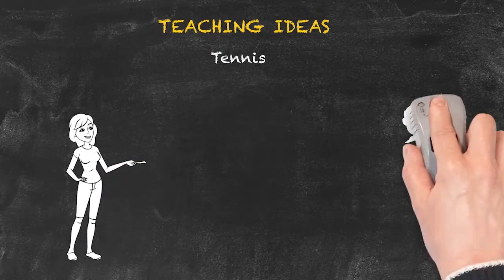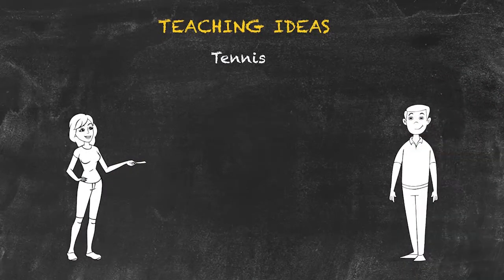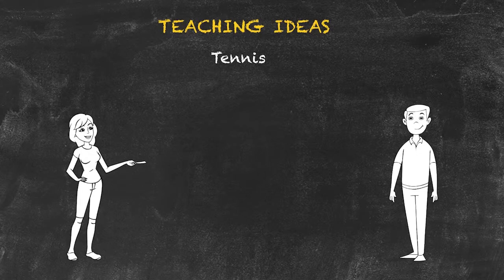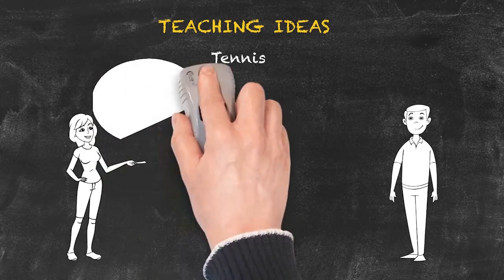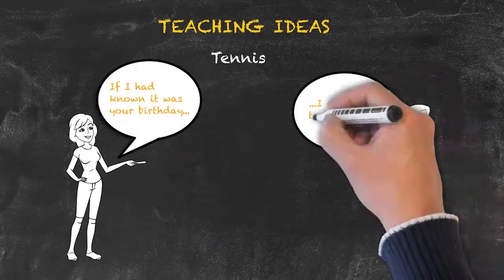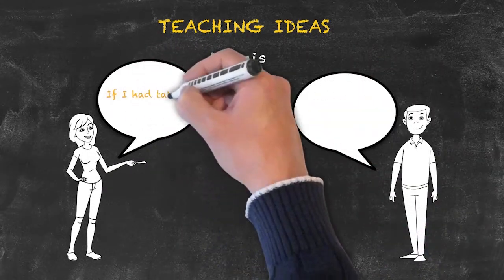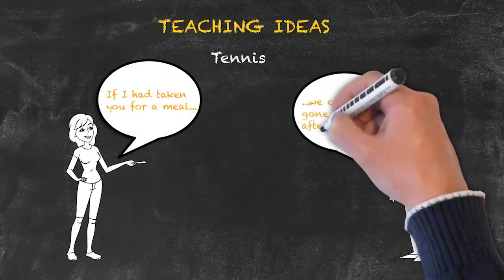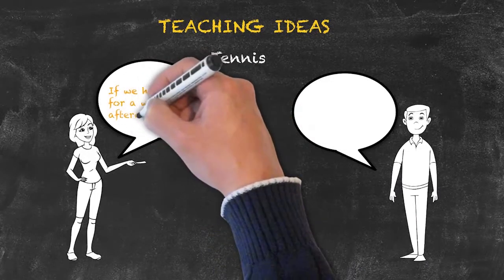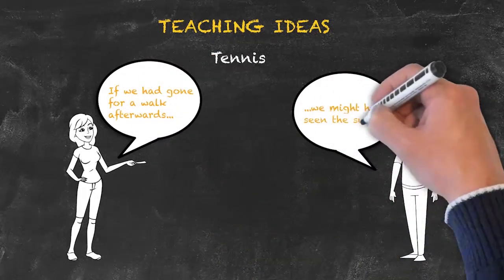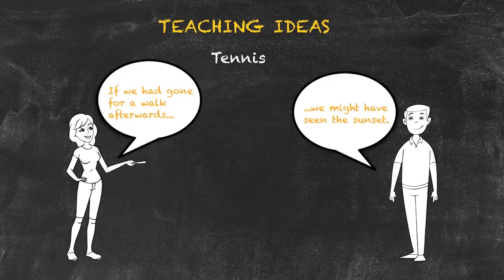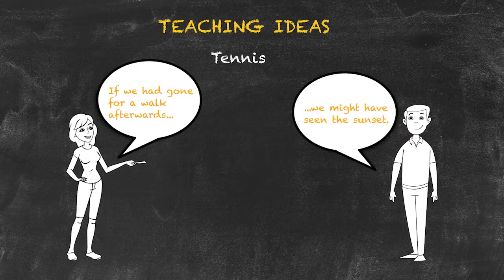Two or three students work in a group and try to use the endings of the previous sentence as the start of the next. For example: 'if I'd known it was your birthday, I would have taken you for a meal.' 'If I had taken you for a meal, we could have gone for a walk afterwards.' 'If we had gone for a walk afterwards, we might have seen the sunset,' and so on, until one student is unable to complete the sentence — and then the other student is the winner.